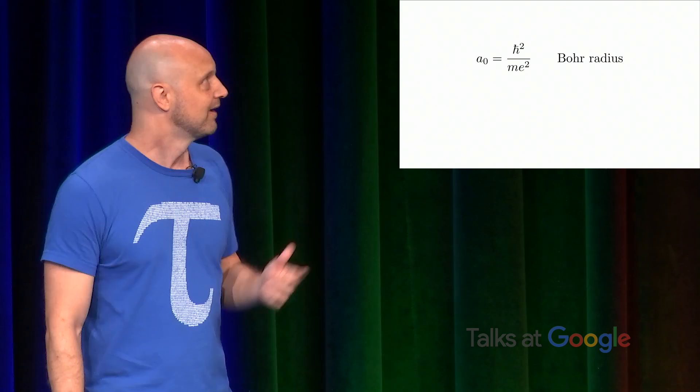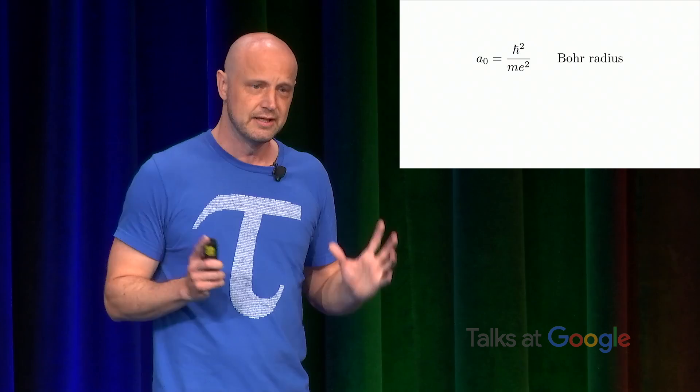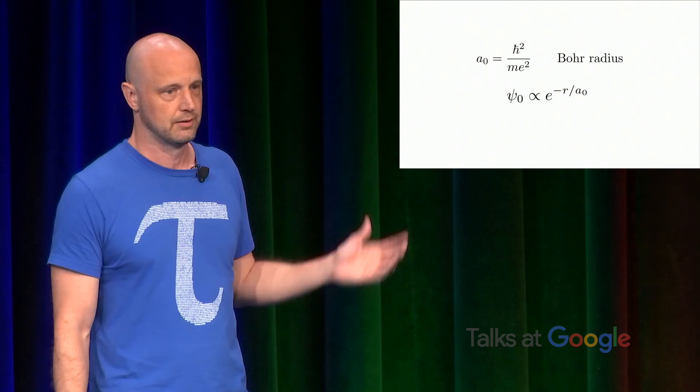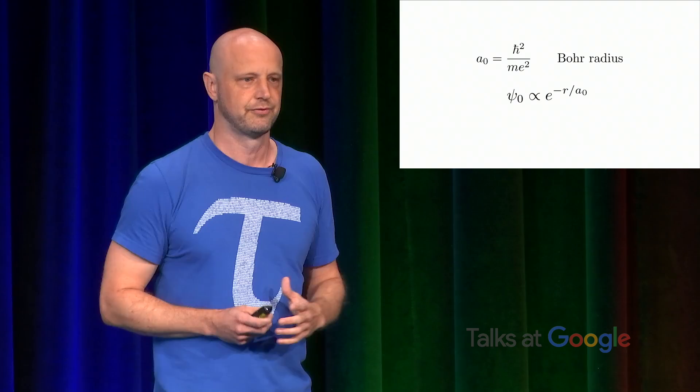Now, so this represents roughly the radius of a hydrogen atom in its ground state, its lowest energy state. And in order to analyze this from the perspective of quantum mechanics, you introduce what's called the wave function, psi naught. And that's proportional to e to the minus r over a naught. And so, again, this just describes the system mathematically.